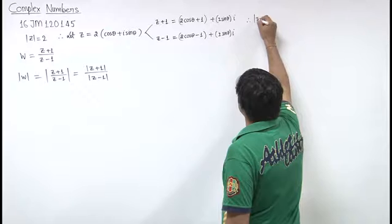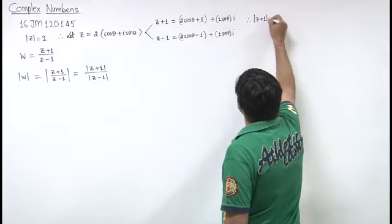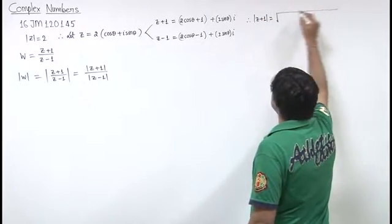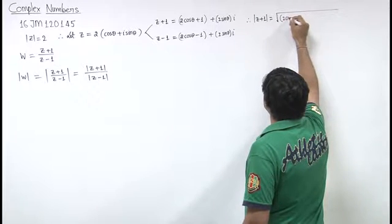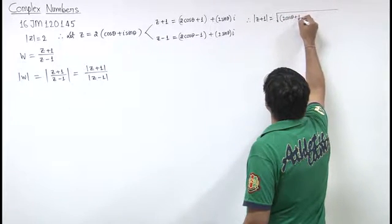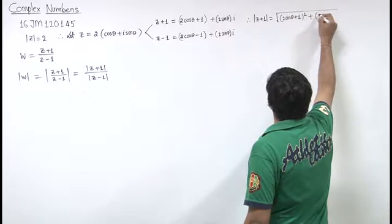That means, mod of z plus 1 is under root of 2 cos theta plus 1 whole square plus 2 sin theta whole square.